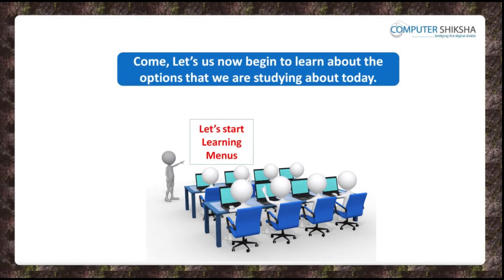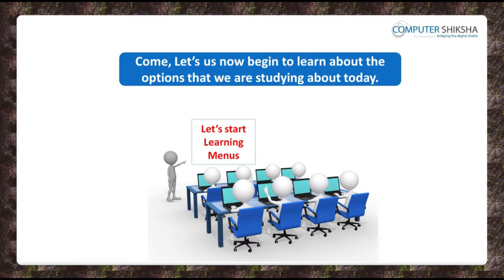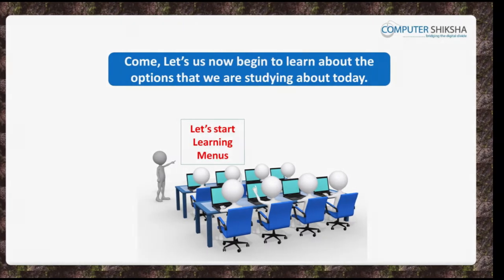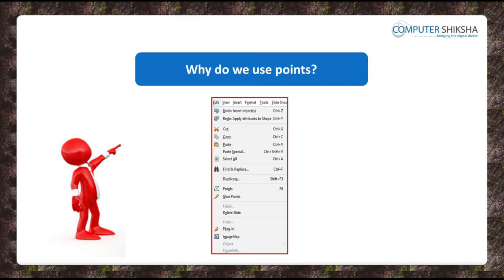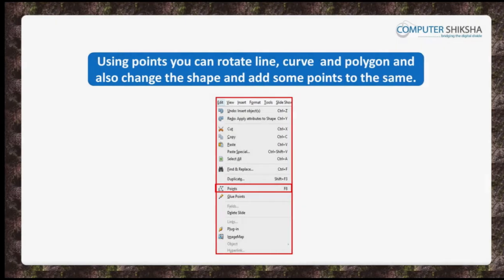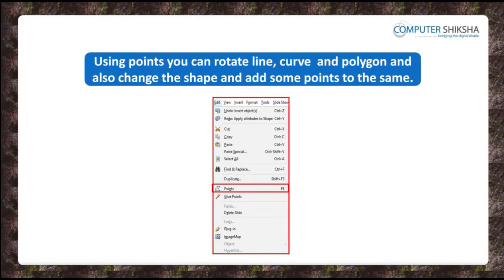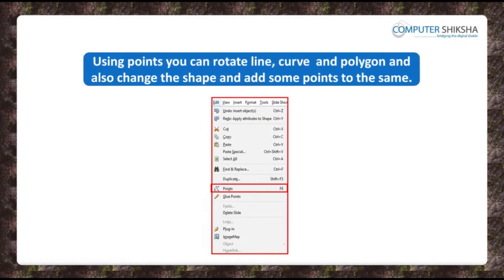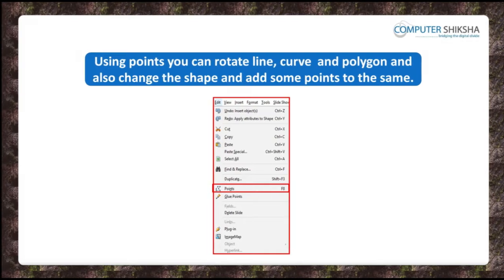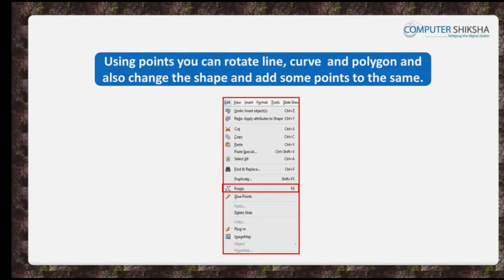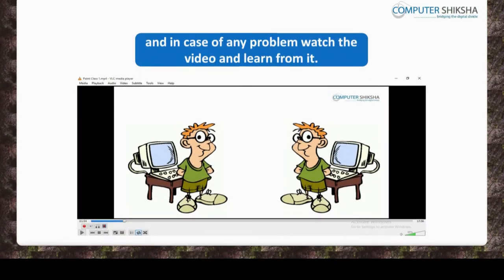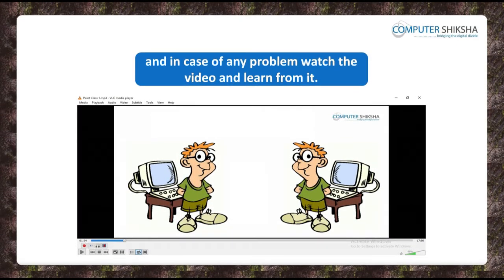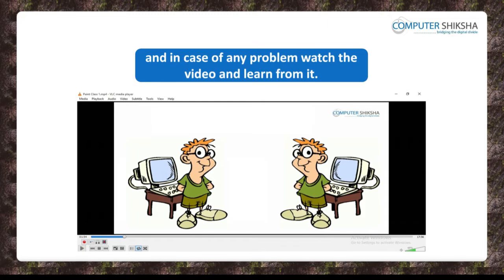Let us now begin to learn about the options we are studying about today. Why do we use Points? Using the Points option, you can rotate any curve line or polygon that you may have drawn on your slide, thereby changing its shape and adding points to the shape. Let us watch the video and learn about how the Points option is used.